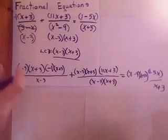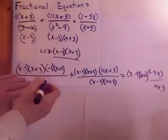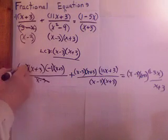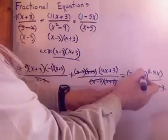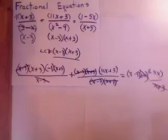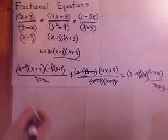So I'm going to do x minus 3, x plus 3, x plus 3 again times the next fraction, which is 11x plus 3 over x minus 3. Remember, I factored that. x plus 3 equals one more to do. All right, x minus 3, x plus 3 times 1 minus 5x all over x plus 3.